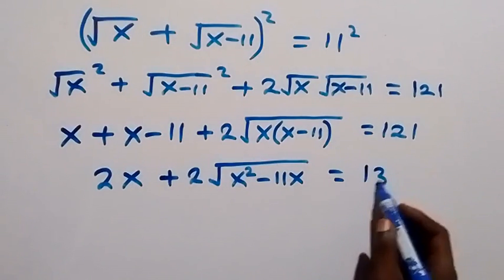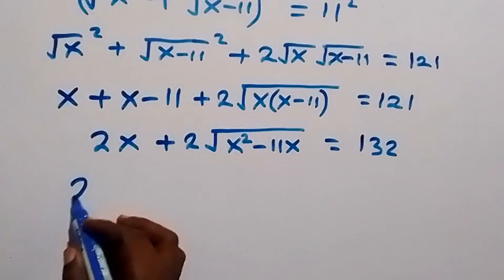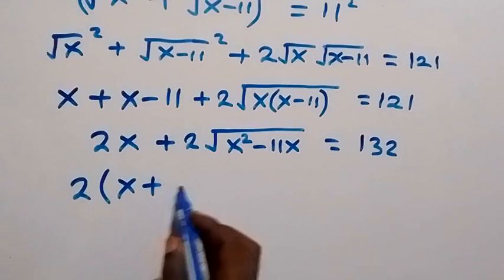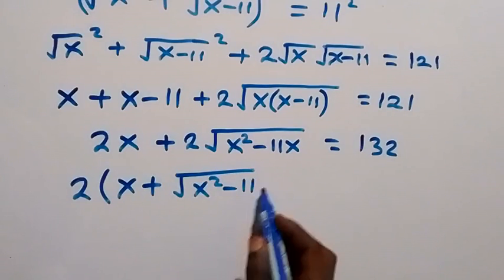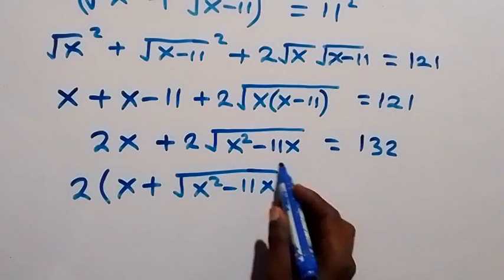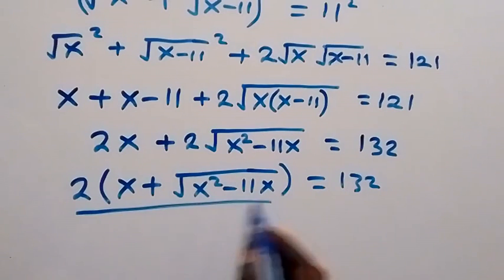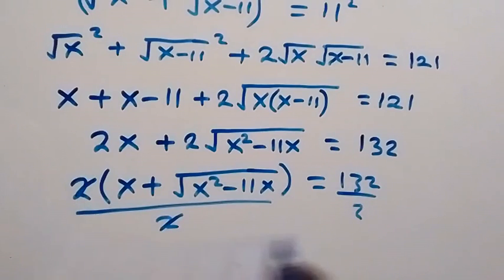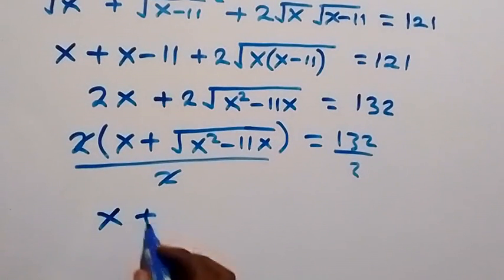121 plus 11 equals 132. Since 2 is common, we factor out 2: 2 times (x + √(x² − 11x)) equals 132. Dividing both sides by 2, the 2s cancel out, leaving 66 on the right side.